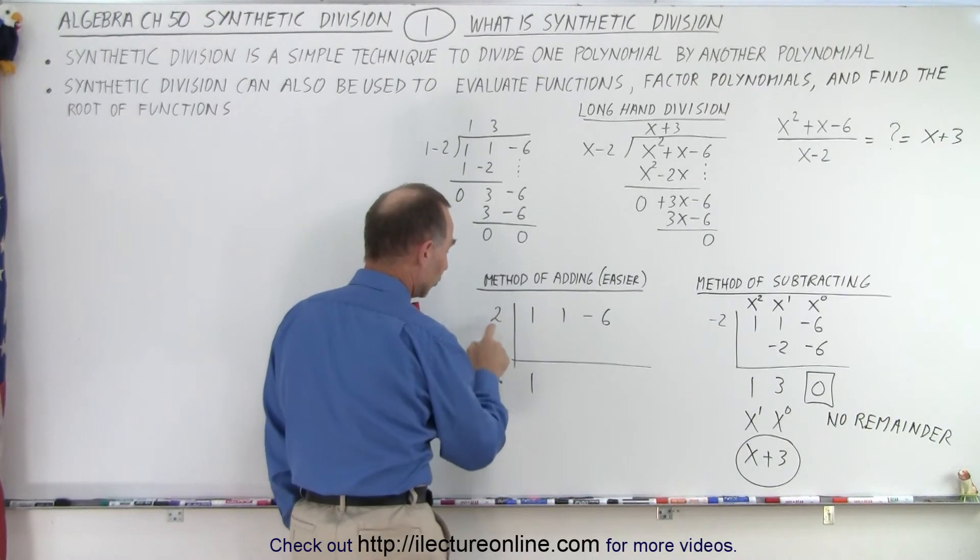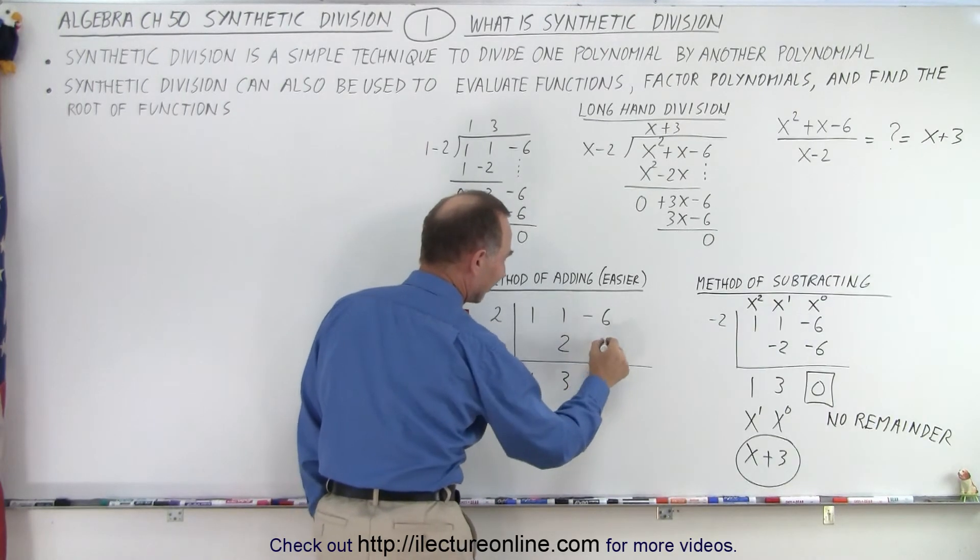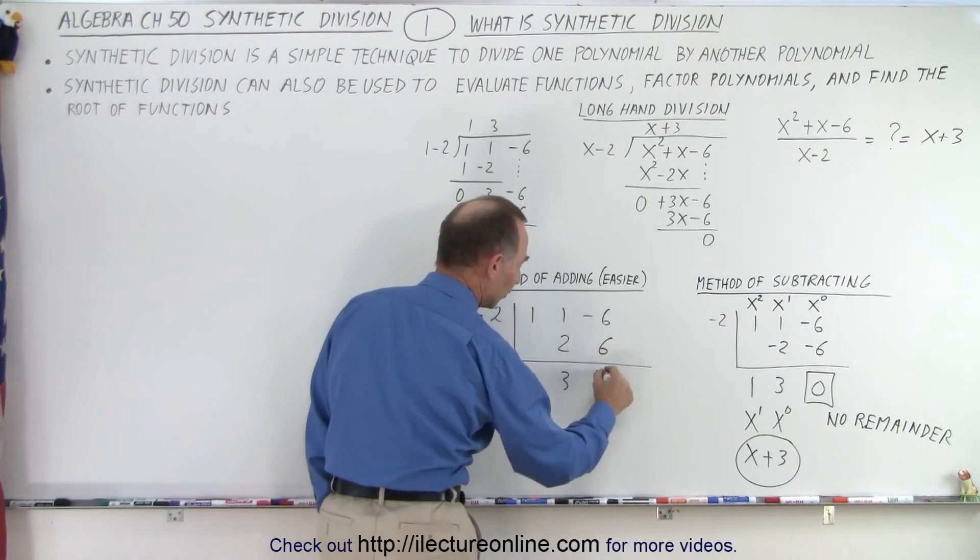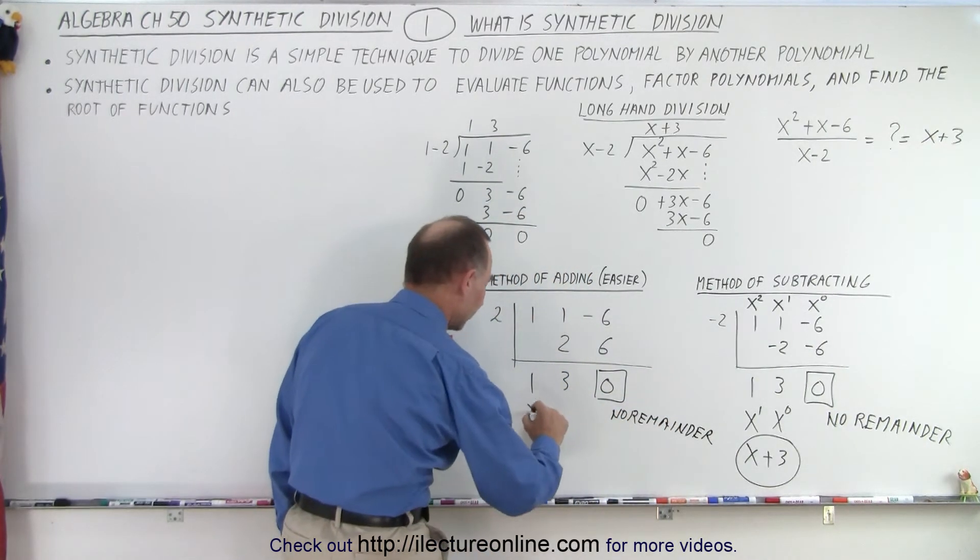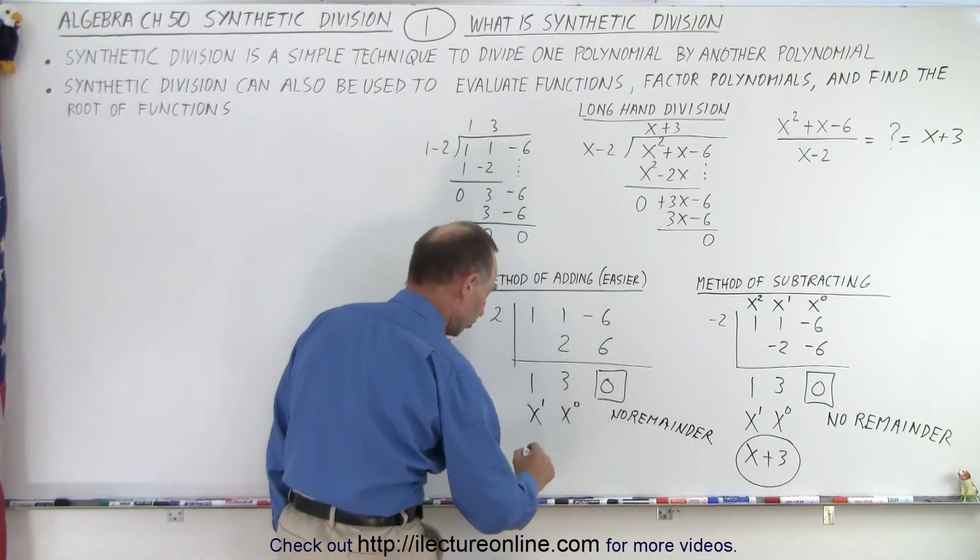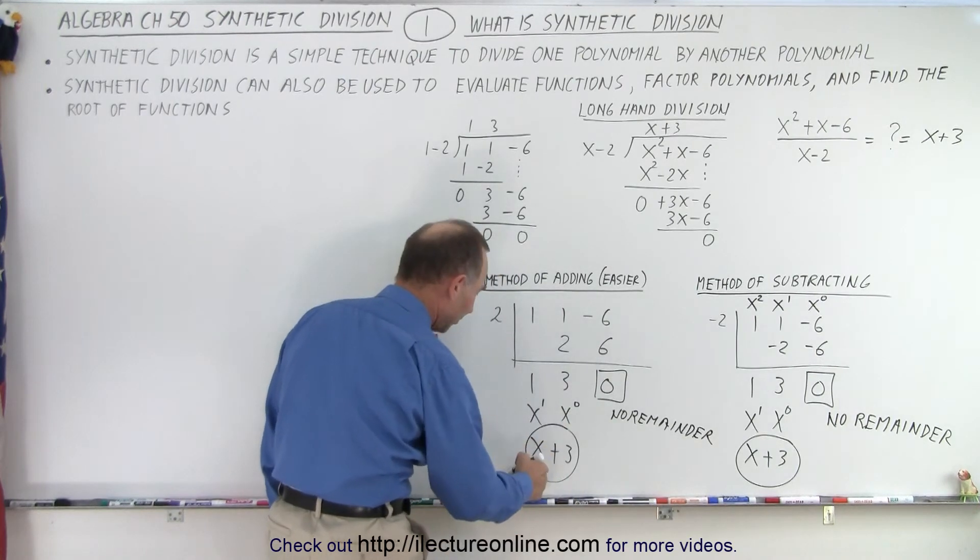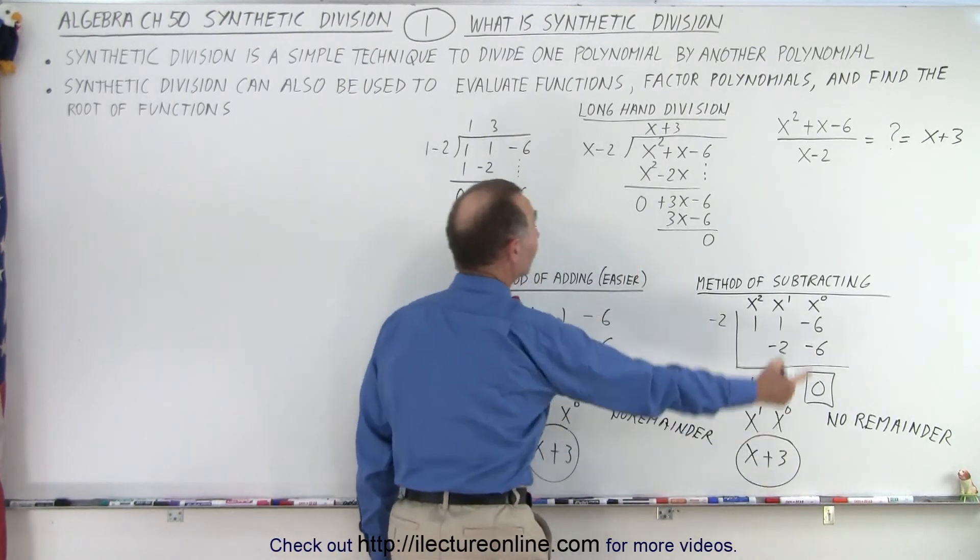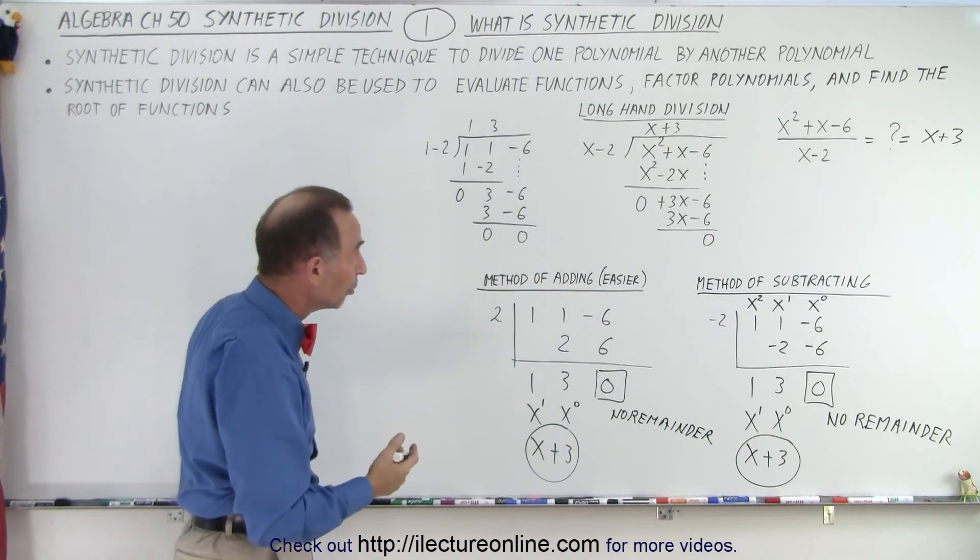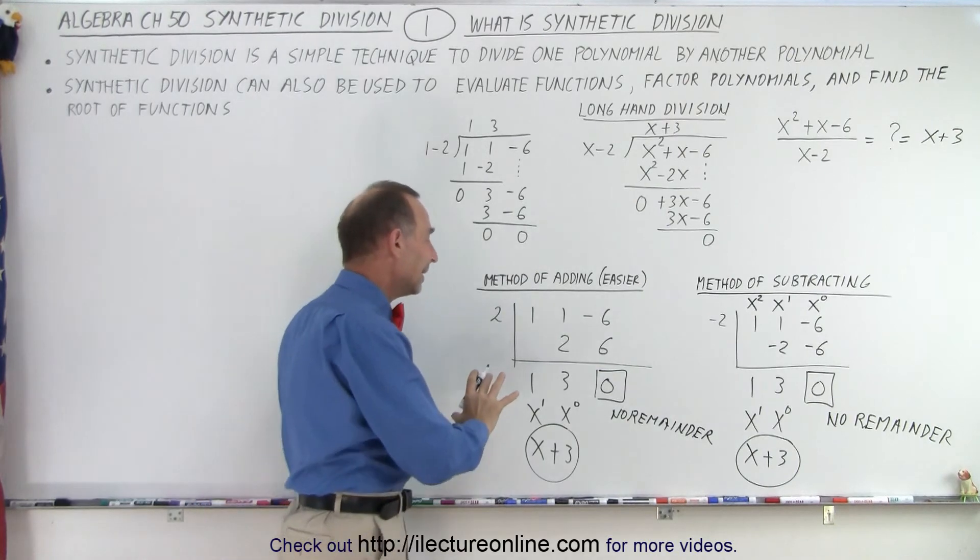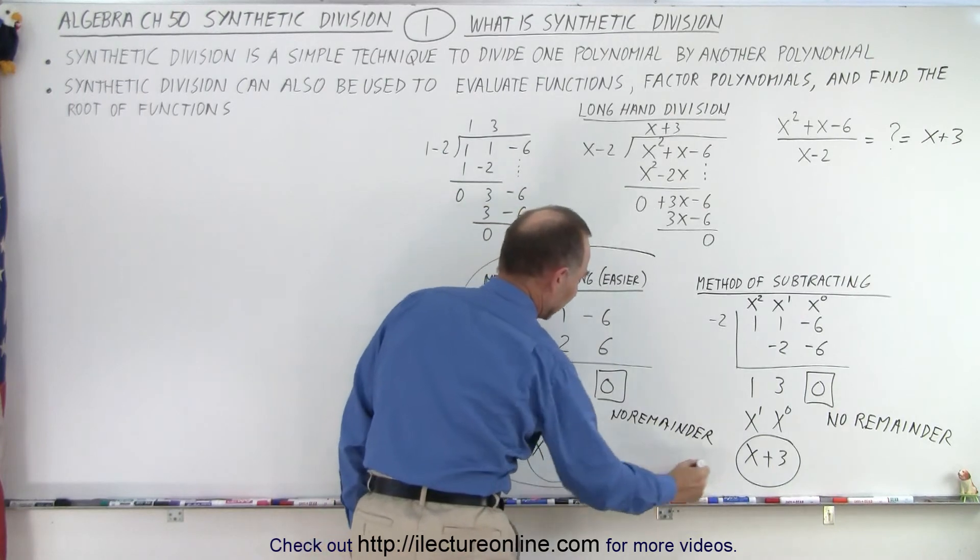So see what that looks like. Again, we drop the 1, 2 times 1 is 2, 1 plus 2 is 3, 2 times 3 is 6, negative 6 plus 6 is 0. Notice this means there's no remainder. And then here, this represents x to the first power, x to the 0 power, so the solution simply is 1 times x plus 3. And again, notice we get the very same result that we got over here, and that is how we do the division of one polynomial by another using synthetic division method.